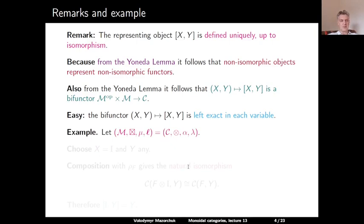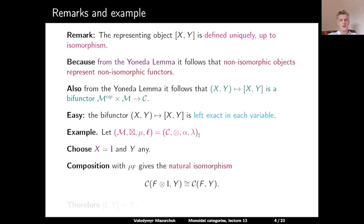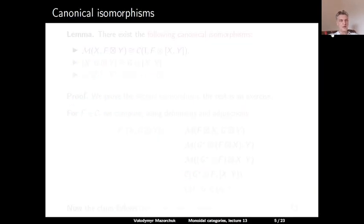Here is a small example. Let us take as M the left regular C-module, so M equals C with the action given by left tensor product — the associativity for the action is given by alpha and the left unitor is lambda. Let X be the identity object I in C and let Y be arbitrary. Then composition with the right unitor gives a natural isomorphism showing that the internal hom from the identity object to any Y is isomorphic to Y.